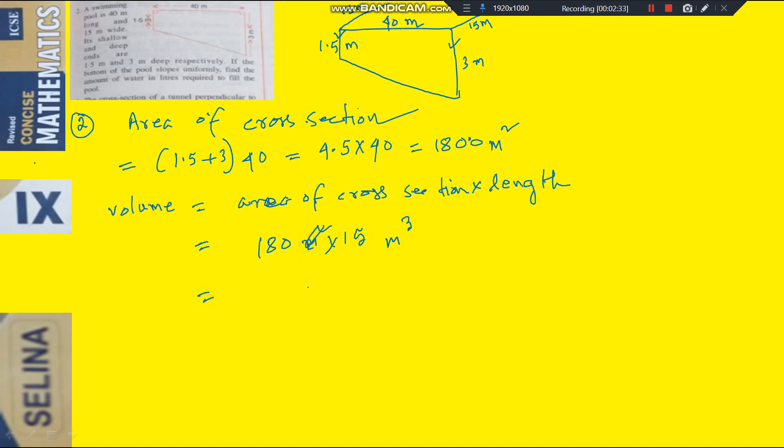It is coming 15 zeroes of 0. So you multiply and tell me. See, we have got 2700 meter cube.